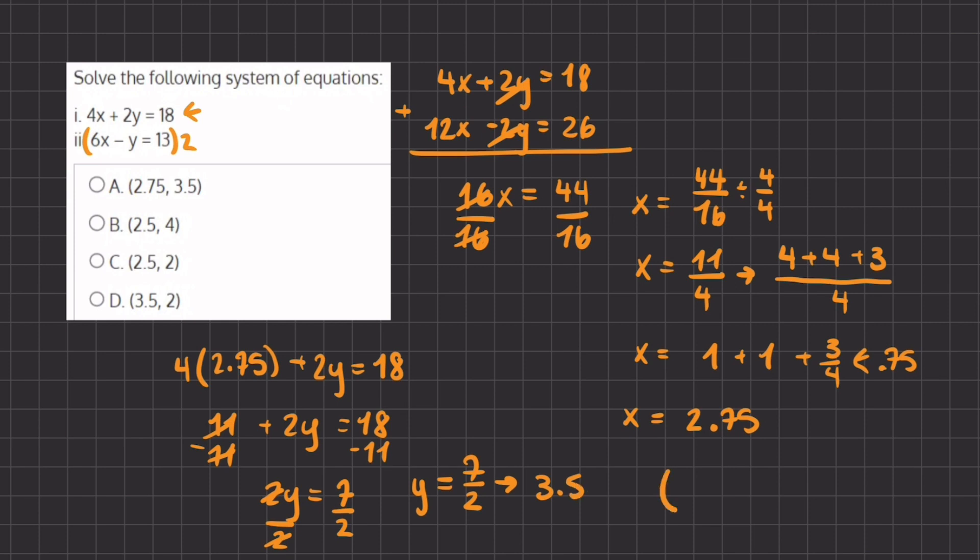So our x value is 2.75, and our y value is 3.5. This will be our final answer, and that corresponds with the answer shown in A. Therefore, A will be our final answer.